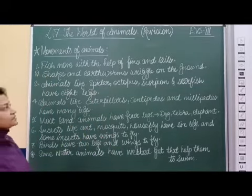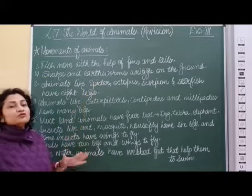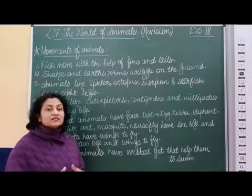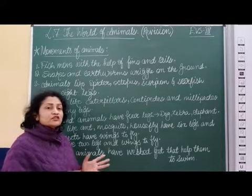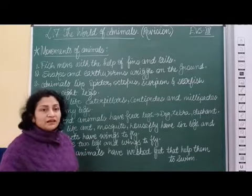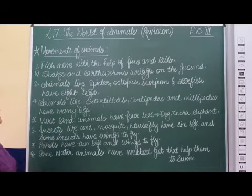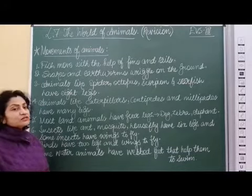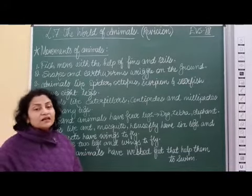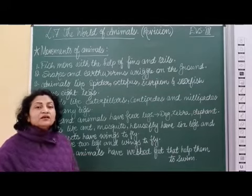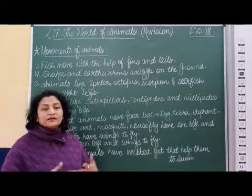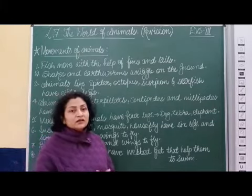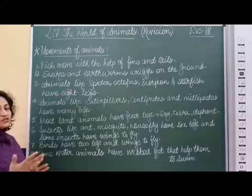Fish move with the help of their fins and tails. Fins are used to swing and move from one place to another, but tails help them to take direction from one direction to the other. They don't have legs. Next, we are talking about snakes and earthworms that crawl on the ground. They don't have legs — they creep or crawl on the ground and move from one place to another.